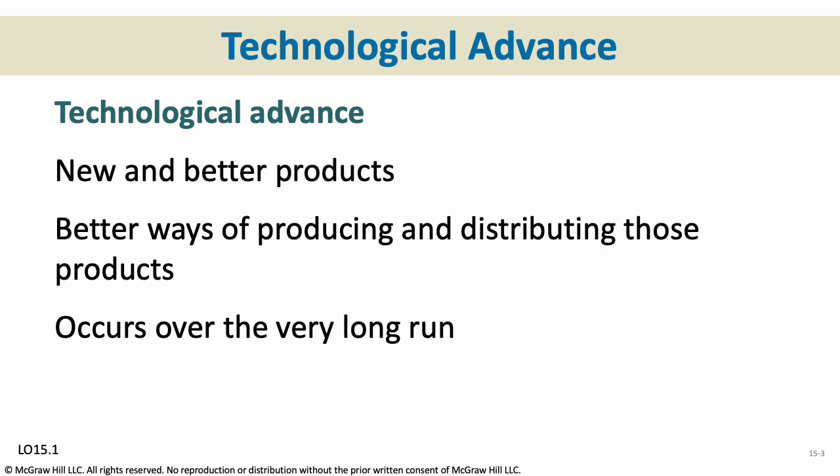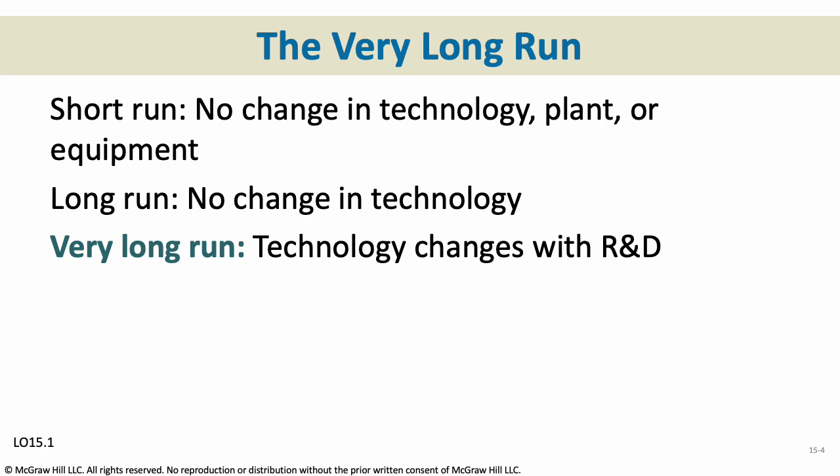Technological advance consists of a three-step process of invention, innovation, and diffusion, and shifts a country's production possibilities curve outwards. It allows us to make more goods and services and better goods and services. In the very short run there's really no change in technology, plant, or equipment. In the long run, plant and equipment can change but technology usually doesn't, whereas in the very long run, technology changes with research and development — something that all sorts of companies invest heavily in to grow and improve themselves.